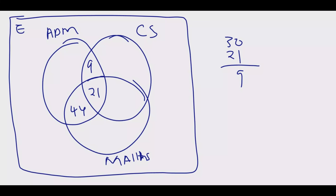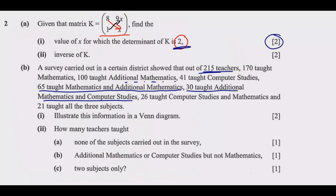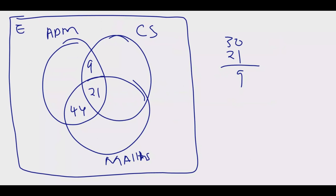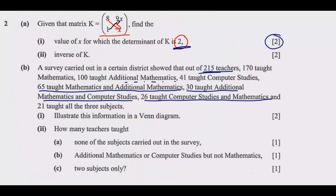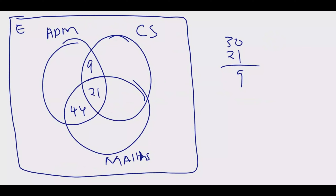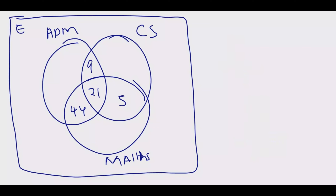For computer studies and mathematics, 26 taught those two subjects. So this intersection region is 26 minus 21 = 5, meaning 5 teachers taught only computer studies and maths without teaching additional mathematics.